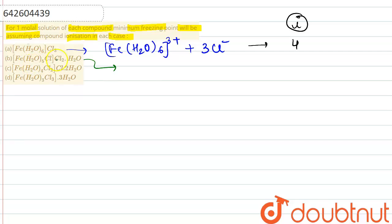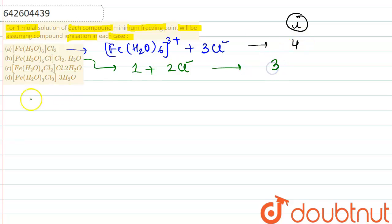Similarly, for the second complex, one ion comes from the coordination sphere and two chloride ions come from outside. So the total number of ions is three, and the van't Hoff factor i = 3.